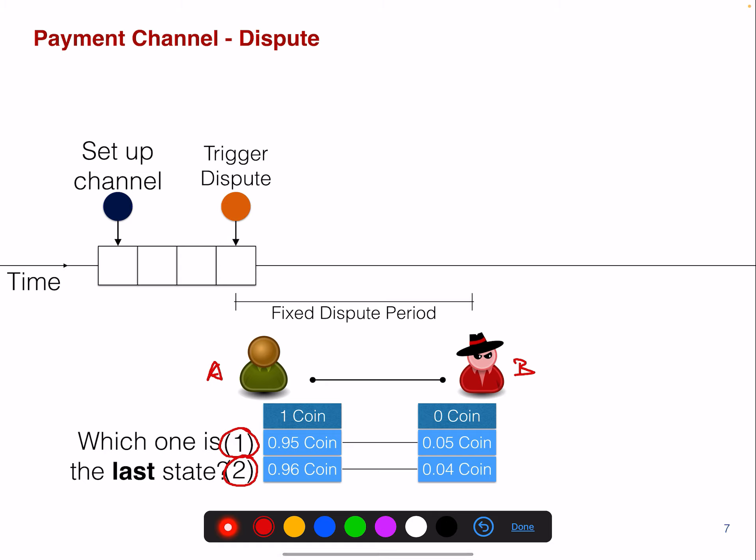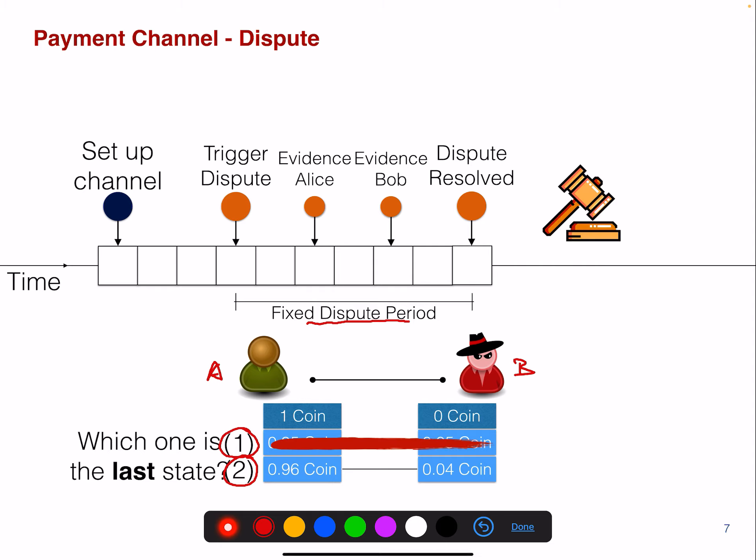So at some point in time, if we don't agree on which one is the last state, we can trigger a dispute. So this can be either A or B, the trigger dispute. And this will trigger a fixed dispute time period, where both can provide evidence. So for example, Alice can provide here an evidence here. And then later, Bob can provide some evidence here. And then the blockchain will, based on this evidence, the blockchain will decide, well, this state is the outdated state. Number two is the latest state. And this is the state that I will write on chain as well.